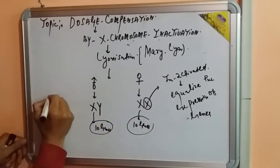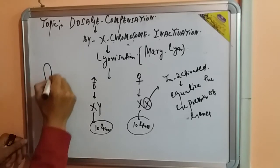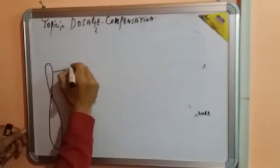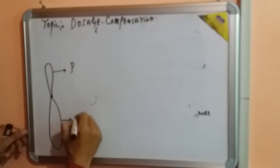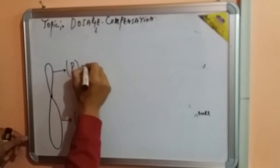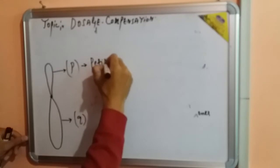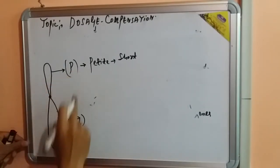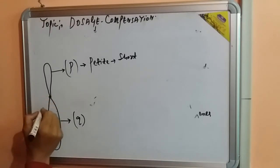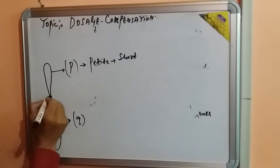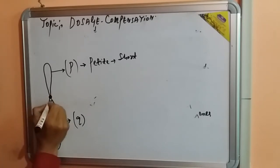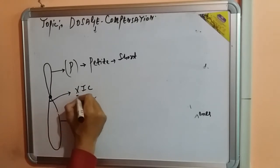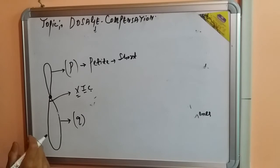If we draw the structure of the chromosome, it has a short arm and a long arm. The short arm is always represented by P — from the French word 'petite' meaning short — and the long arm is represented by Q. Near the centromere, which is the primary constriction, there is a special region called the X chromosome inactivation center.